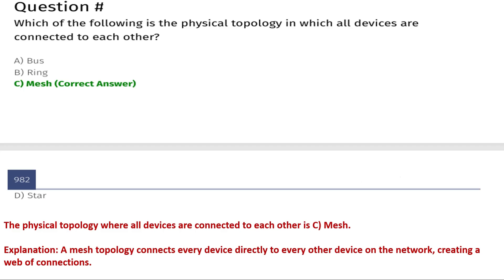The physical topology where all devices are connected to each other is mesh. A mesh topology connects every device directly to every other device on the network, creating a web of connections. That's why the correct answer is C, mesh.